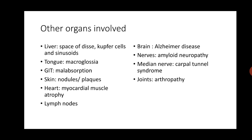Many other organs are also involved in amyloidosis. In the liver, amyloid deposits within the space of Disse, Kupffer cells, and sinusoids. In the tongue it causes macroglossia or big tongue. In the GI tract, deposition in the wall leads to dysmotility and malabsorption. In the skin it produces small nodules or plaques. In the heart it deposits in the myocardial muscles, giving rise to atrophy. In Alzheimer's disease, amyloid proteins deposit in the brain. Carpal tunnel syndrome occurs due to affection of the median nerve, and arthropathy can occur when it deposits in joints.